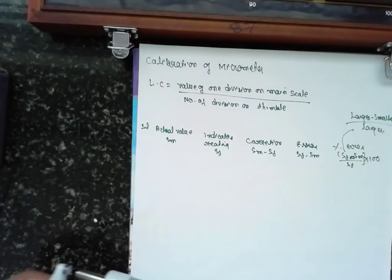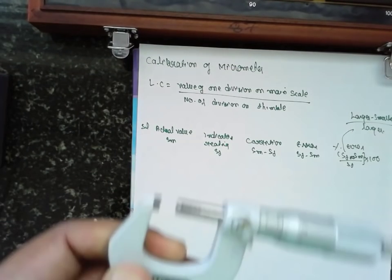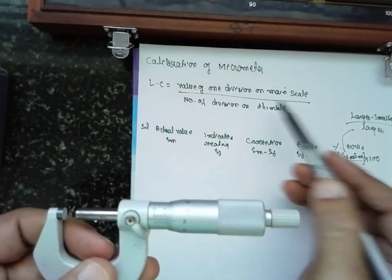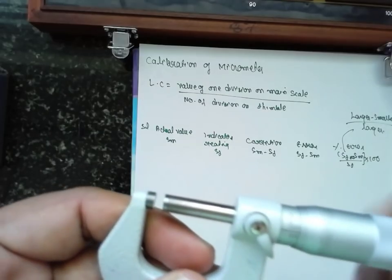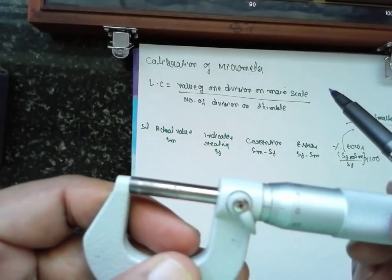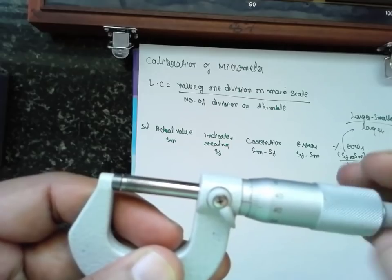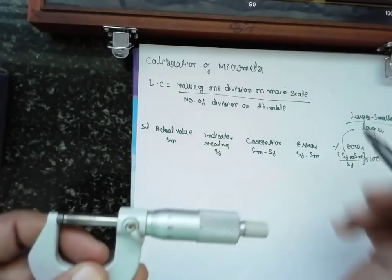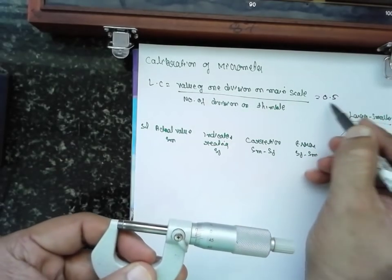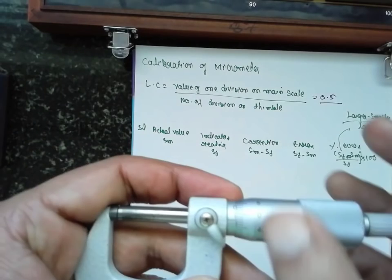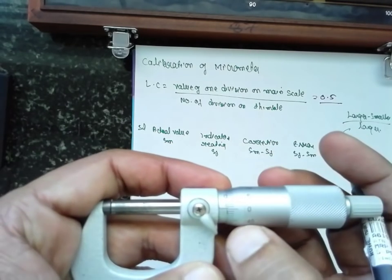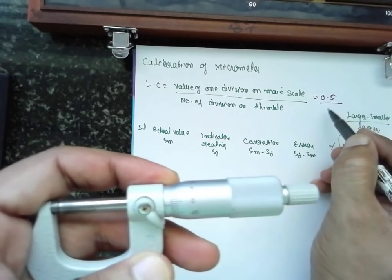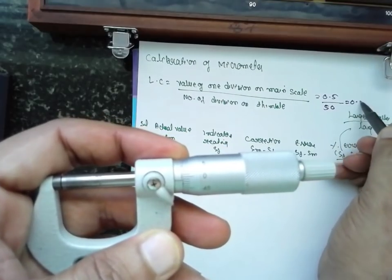The least count for the micrometer: the smallest division on the main scale is 0.5. If you rotate one rotation it moves 0.5. Smallest is 0.5 divided by number of divisions on the vernier scale. The number of divisions on the vernier scale is 45, or if you measure it, it will be 50. Least count is 0.01 mm.